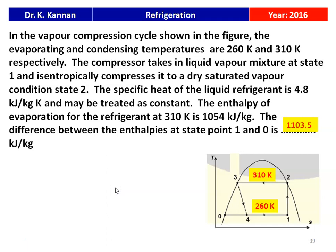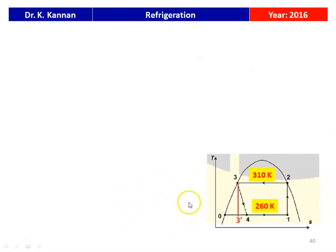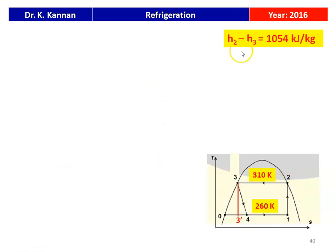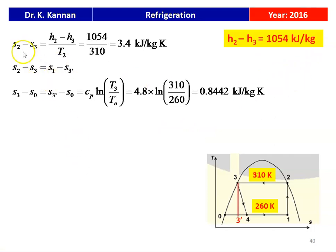The answer is 1103.5 kJ/kg. From the diagram, the evaporator temperature is 260 Kelvin and condenser temperature is 310 Kelvin. Points 1, 2, 3, 3-dash form a rectangle. The entropy change S2 minus S3 equals (H2 minus H3) divided by T2, which is 1054 divided by 310, equal to 3.4 kJ/kg·K. Since S2 minus S3 equals S1 minus S3-dash, we then calculate S3 minus S0 equals Cp multiplied by ln(T3/T0).